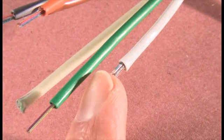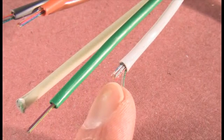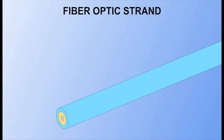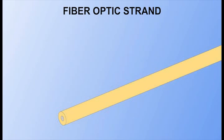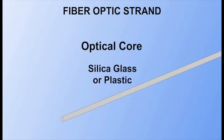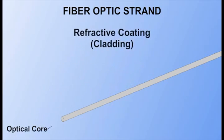These strands are typically smaller in diameter than a human hair. A fiber optic strand consists of multiple layers. The actual conductor is a silica glass or plastic core. This core is surrounded by a refractive coating called cladding,